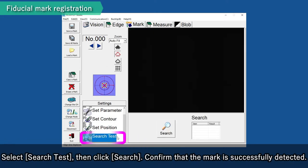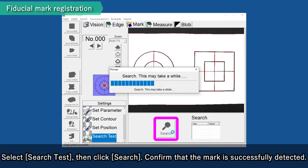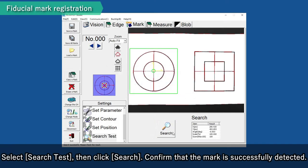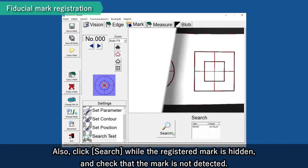Select Search Test, then click Search. Confirm that the mark is successfully detected. Also, click Search while the registered mark is hidden and check that the mark is not detected.